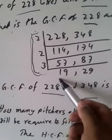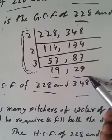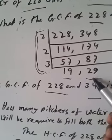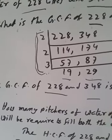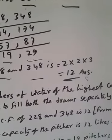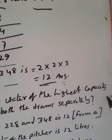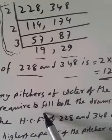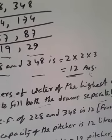12, multiply 19, multiply 29. If we multiply 12 with 19 and 29, then we will get least number. How many pitchers of water of the highest capacity will be required to fill both the drums separately?